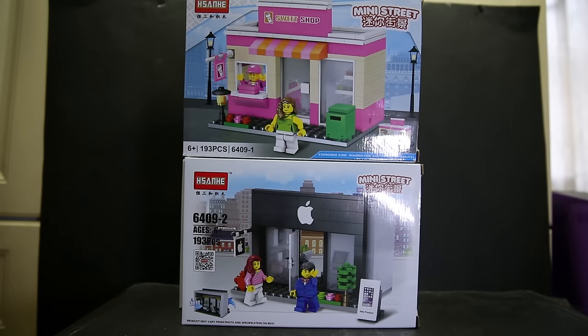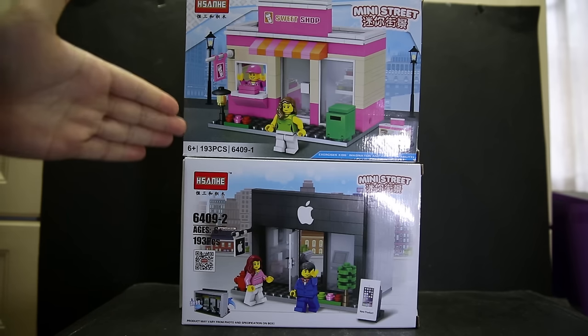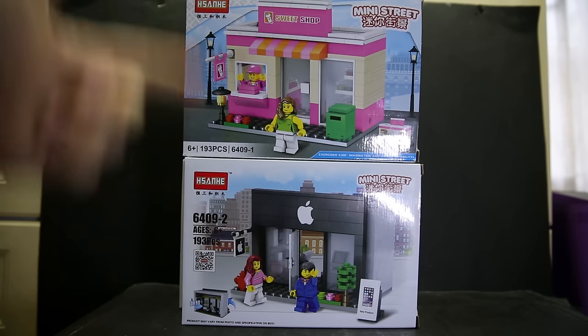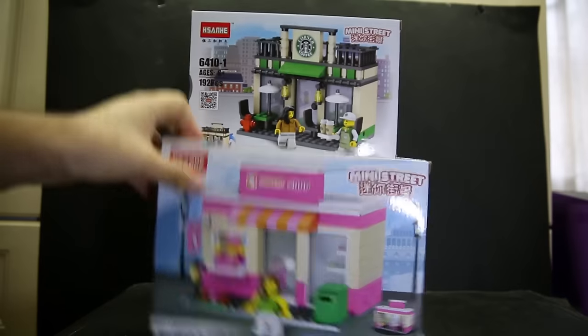Hello and welcome to the LEGO bootleg review of the Mini Street from Hezai. Hezai is a pretty decent brand, and there are six boxes in this set currently and they are all minifigure scale. We have sets 6409-1 and 2, which are supposed to be Dunkin Donuts and what looks like an Apple store.